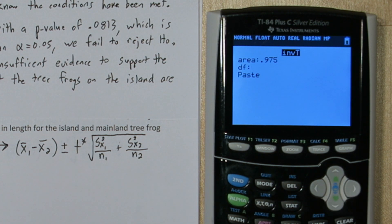And for degrees of freedom put 40.6. So our critical value T star is approximately 2.02.